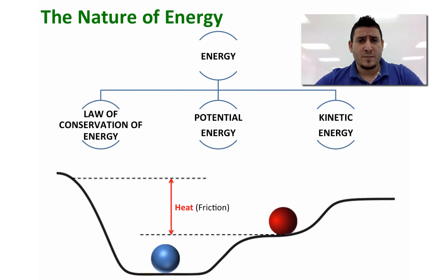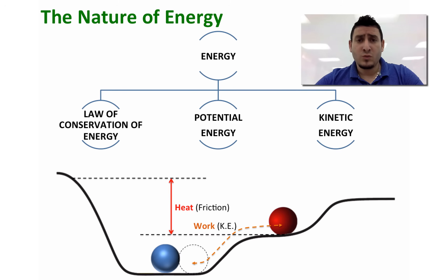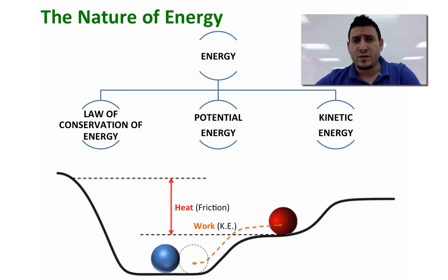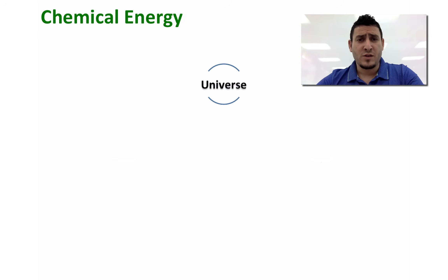This energy loss produces heat and is called frictional energy. The red ball went from the initial position to the final position using some of the transferred energy as kinetic energy from the blue ball. This could also be called work. Work, by definition, is the force acting over a distance. The pathway determines how much energy will be transferred as heat or work. Rough surfaces will increase friction and therefore more energy will be transferred as heat.